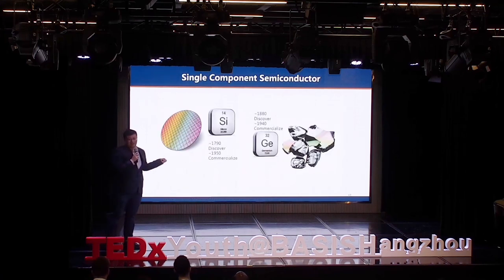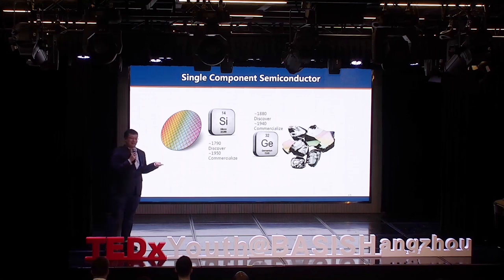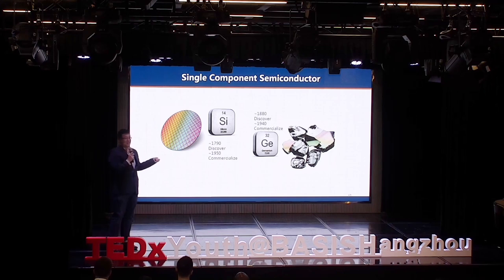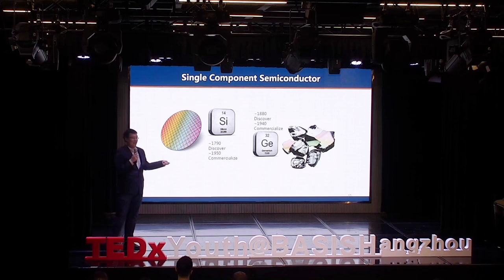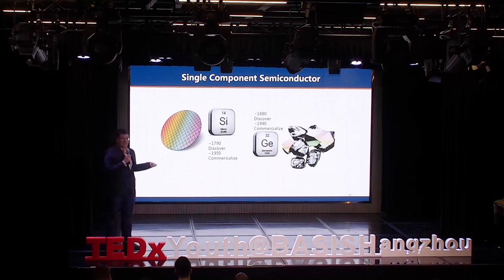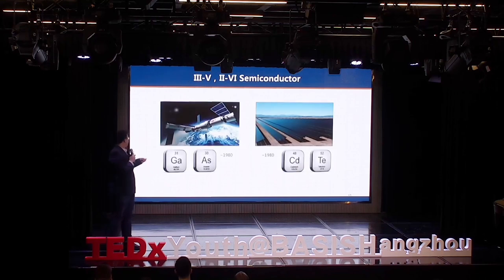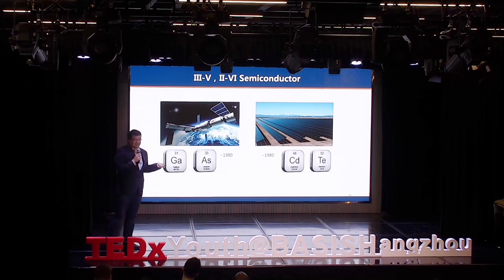Single-component semiconductors are the first generation. The development of photovoltaic materials is actually the same as the development of semiconductors. People first investigated single-component semiconductors — silicon and germanium. Silicon is used everywhere: in your cell phone, your microphone. And they were commercialized as photovoltaics just 60 years ago.